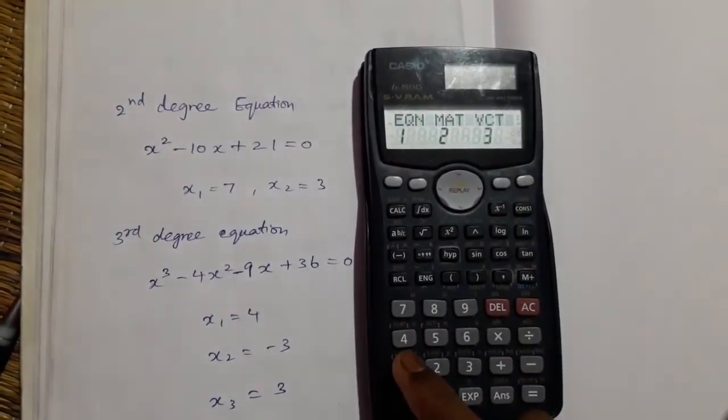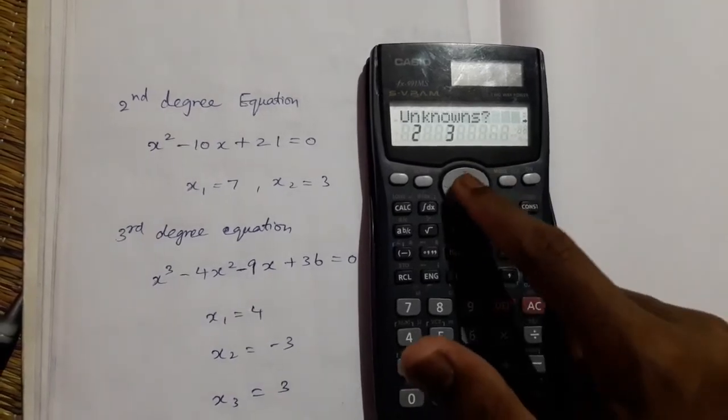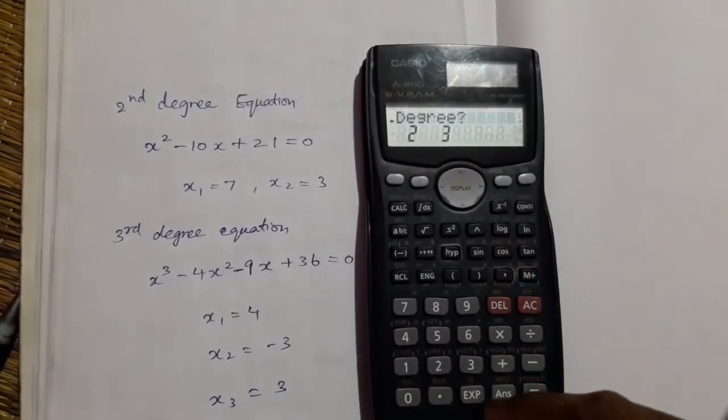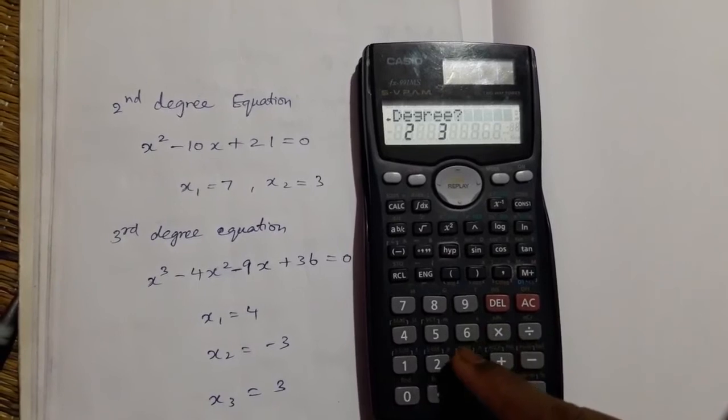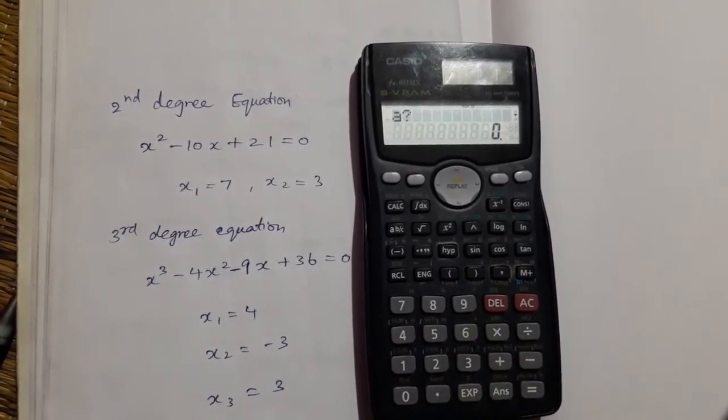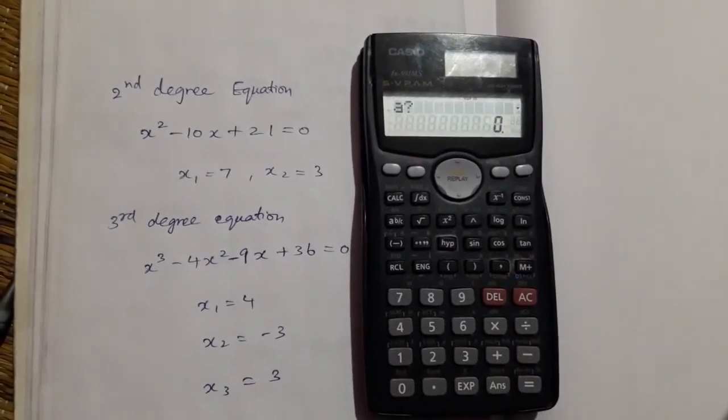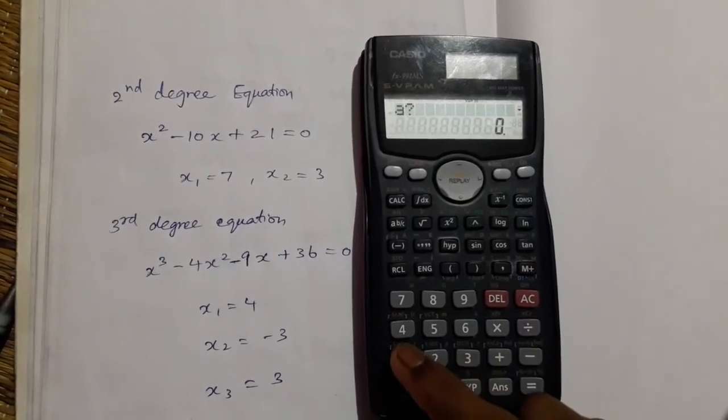Then click on the mode 3 times, click 1 for equation, press right side button, degree 3. Then input the numbers for x cube, coefficient is 1, equal to.